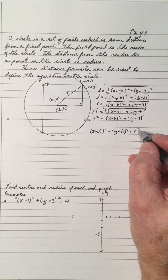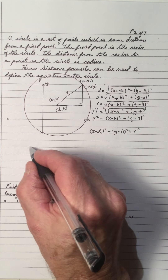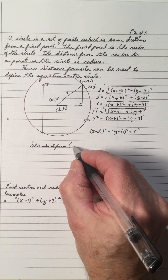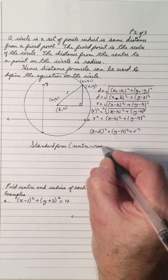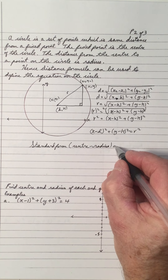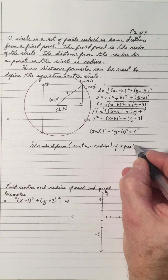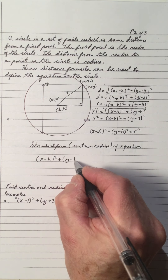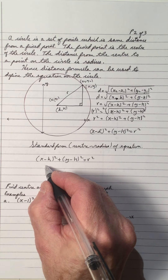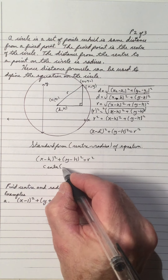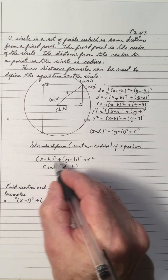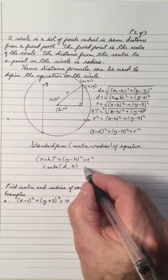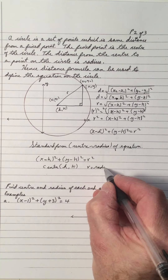So the equation is (x minus h) all squared plus (y minus k) all squared equals r squared. This is the standard form — I call it the center-radius form because it gives you the center and the radius. The center is (h, k). Notice the coordinates are opposite of what we have in the equation: negative h gives h, negative k gives k. And r is the radius, which we take the square root of.